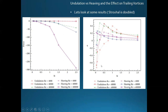Looking at efficiency, undulation is again orange, red, and green, and is way more efficient than heaving — which we would expect from the power curve. All efficiency peaks happen at around Strouhal numbers of 0.1 to 0.2 — these graphs use double the Strouhal number because they use the tail tip value, so results line up with the Goldilocks zone of roughly 0.15 to 0.5, as expected.